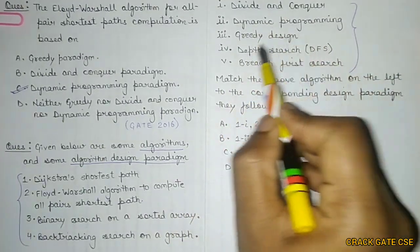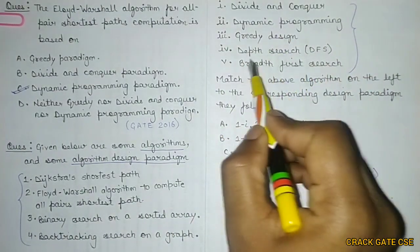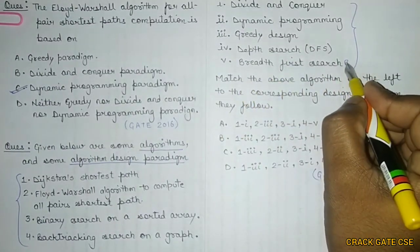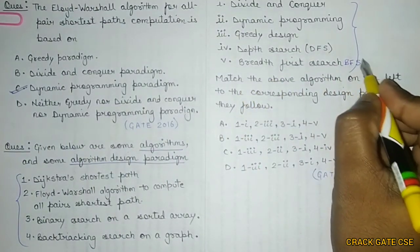And these five are the algorithm design paradigms: divide and conquer, dynamic programming, greedy design, depth-first search (DFS), and breadth-first search (BFS).